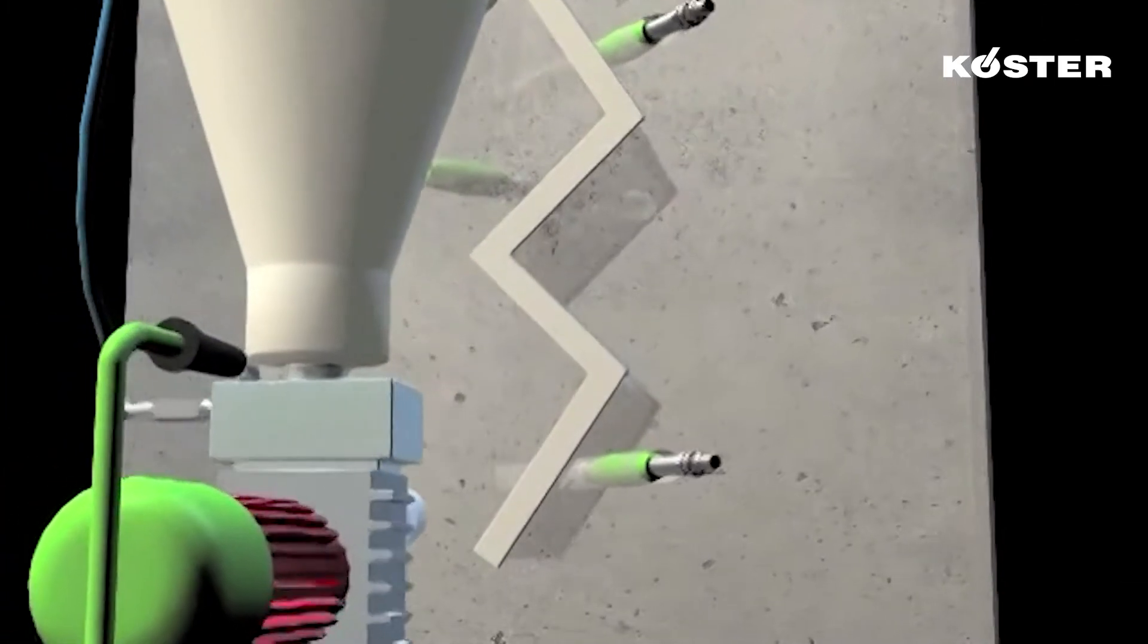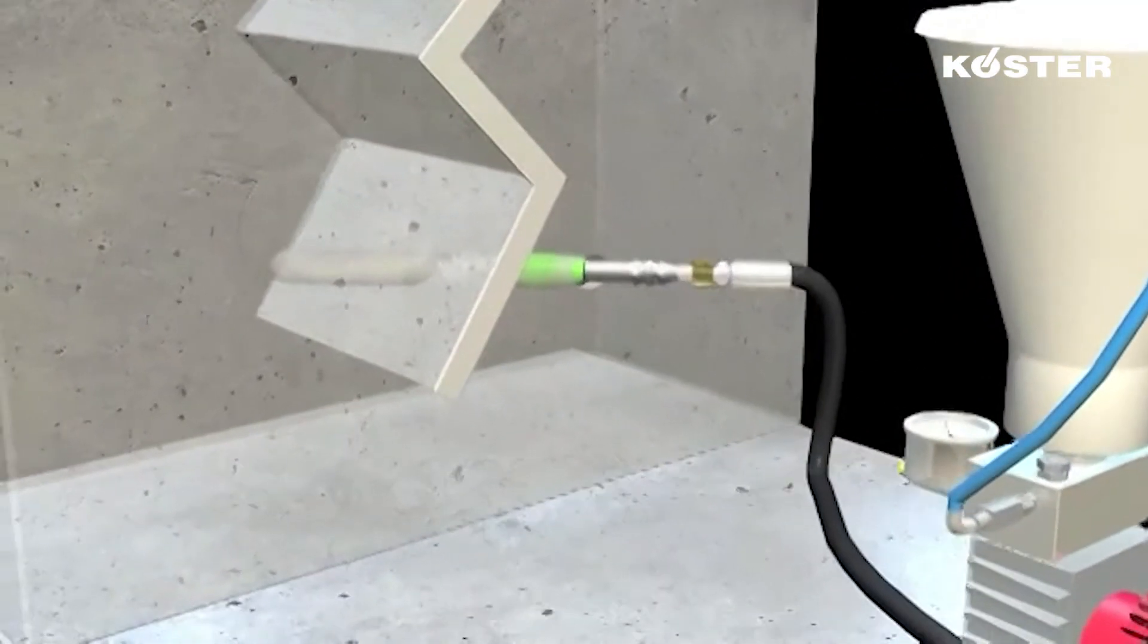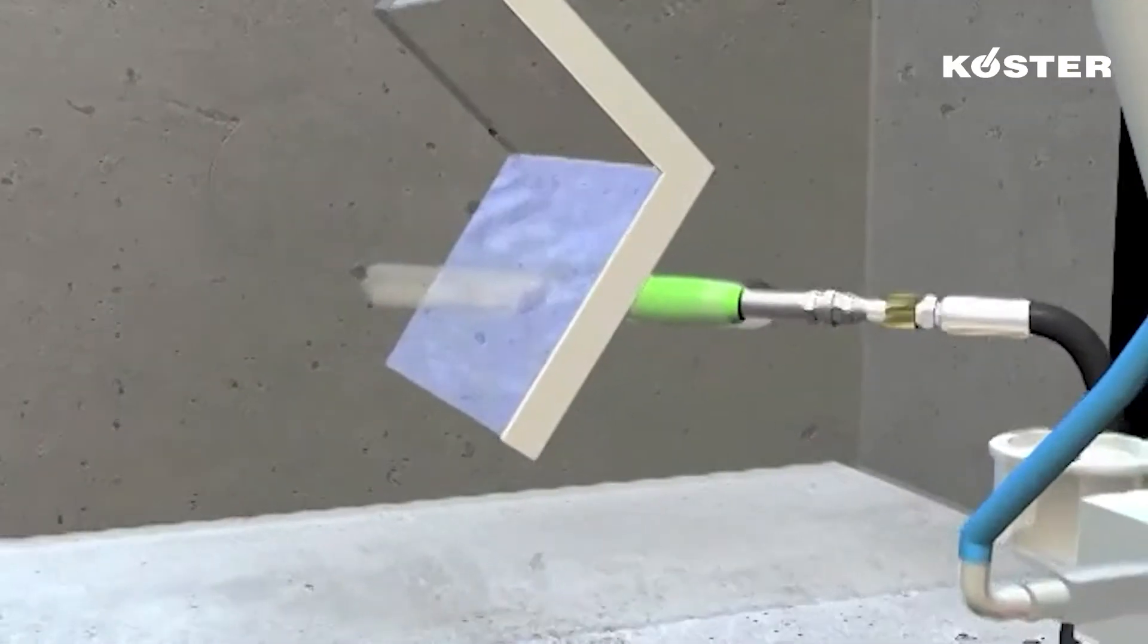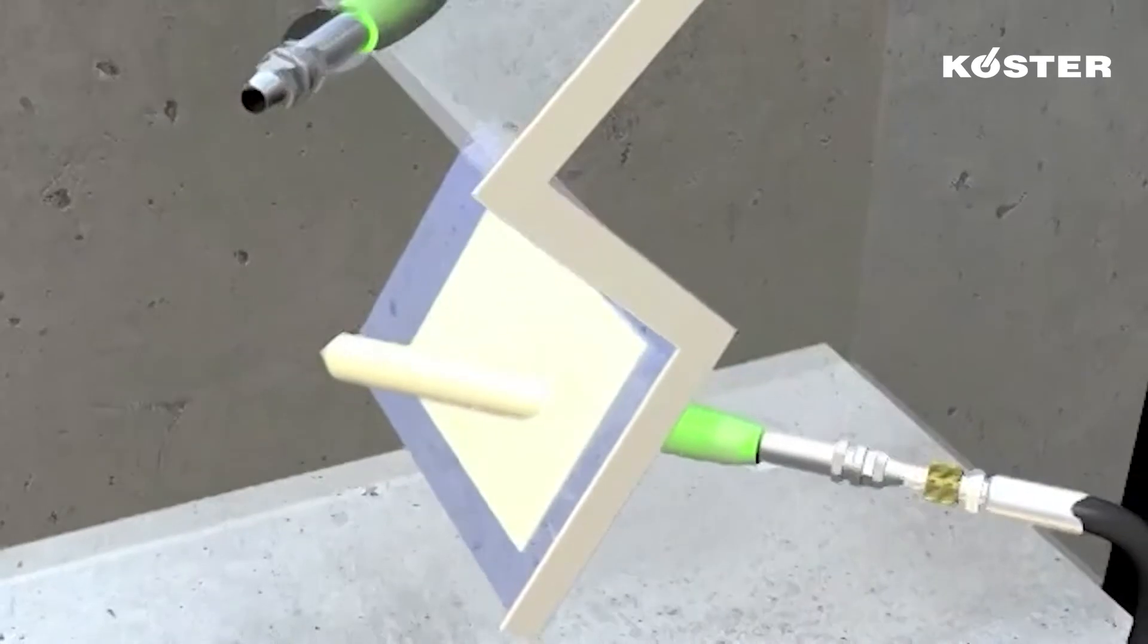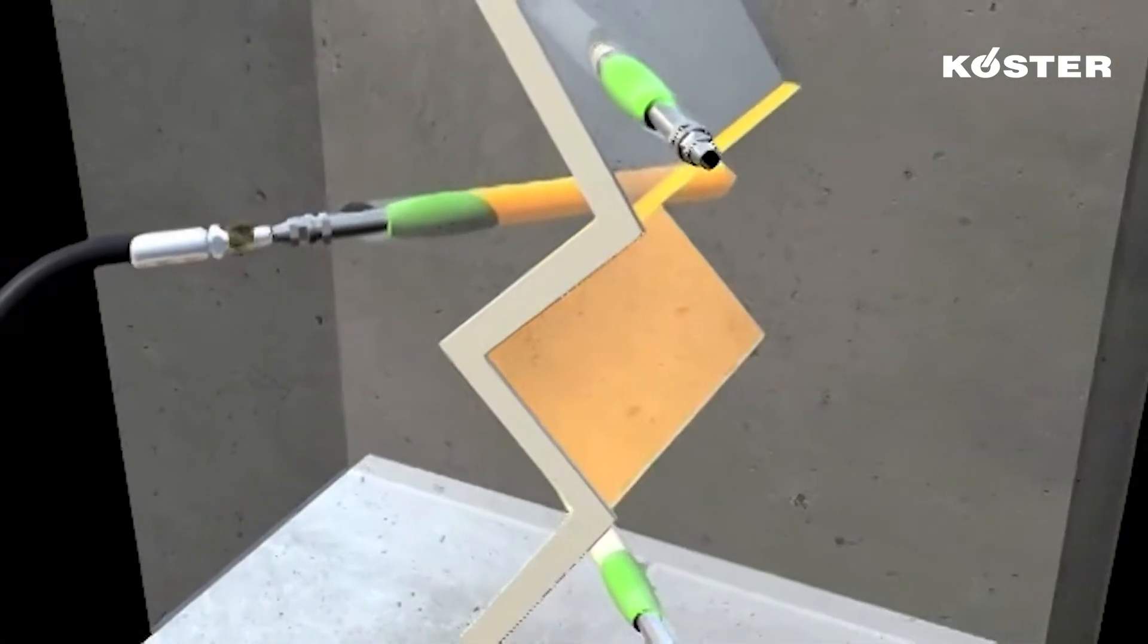The resin is now mixed and injected into the crack with a one-component pump. The resin foams and displaces the water. In areas where the crack is dry, the material hardens into an elastic solid body resin.